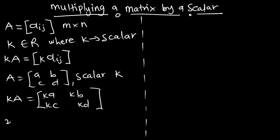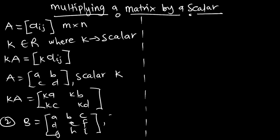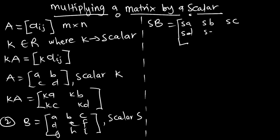Very good. So the second point: if we have matrix B, which is a 3×3 matrix, where we have our scalar also as S, and we have to perform the operation S times B — if we multiply the scalar by the matrix, it is going to be in this form. So S multiplying A, S multiplying B, S multiplying C, S times D, S times E, S times F, S times G, S times H, and S times I. This is how we perform the operation, multiplying a scalar to a matrix.